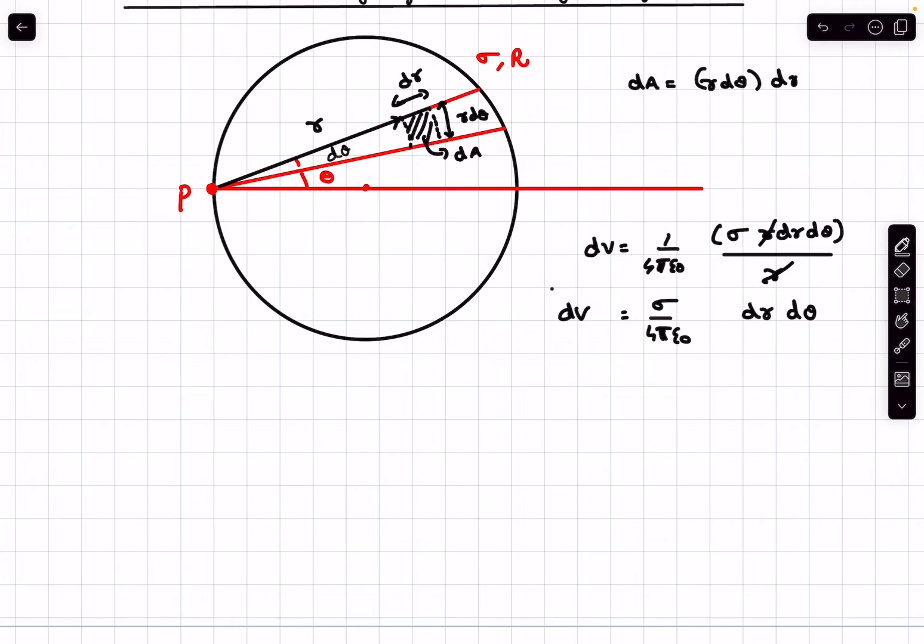From here the r's cancel out and the small potential dV due to this element comes out with this particular value. Now if we want to find out the total contribution due to the disk, we have to integrate this. On the right hand side we have r and θ as our variables, so this is what we call a double integral. We have to put two integral signs here.